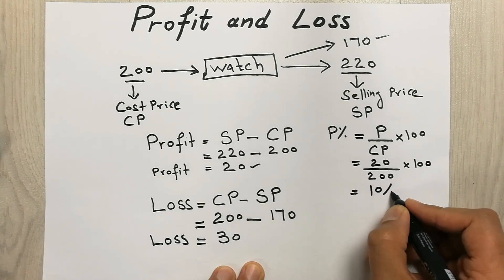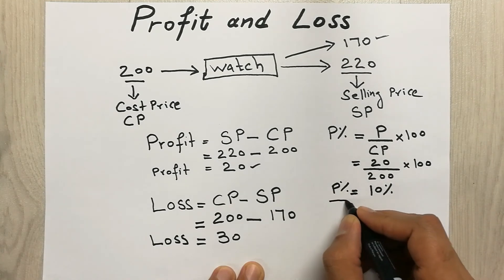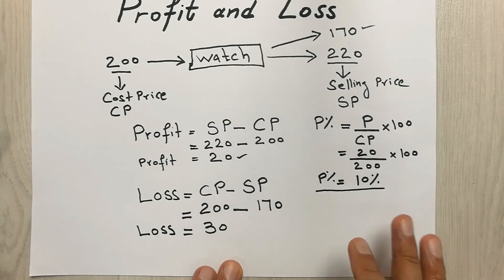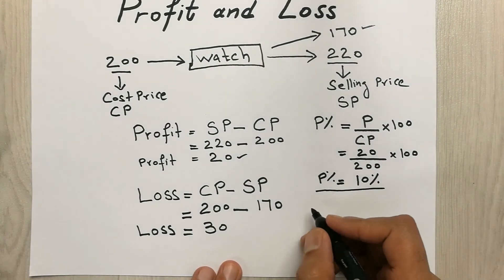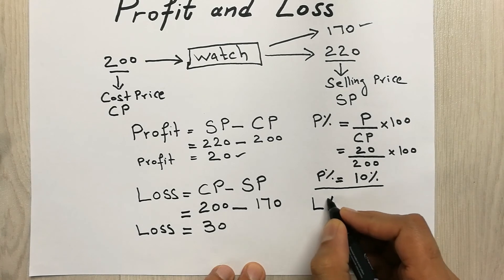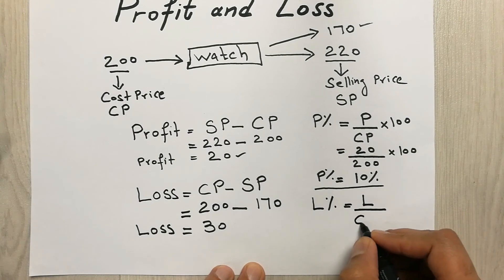So our answer will be 10. So this is our profit percentage. So now we will find out the loss percentage. The formula for loss percentage is L percent equals to loss divided by cost price.